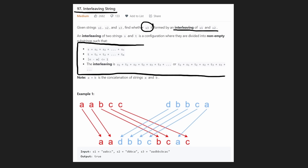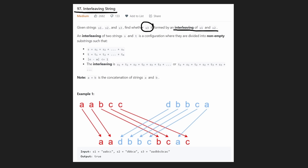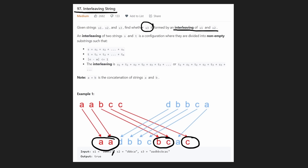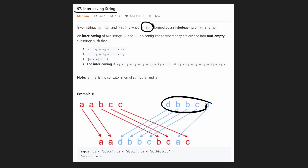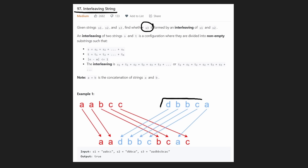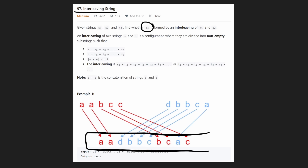They have a description, but it actually just made things more complicated. Basically what we're saying is: can we take string one and string two, split them into substrings — and notice how the relative order of the characters is maintained, that's very important — and then add them together to form the third string? We can split the strings in any way that we want, but the relative order must be preserved.